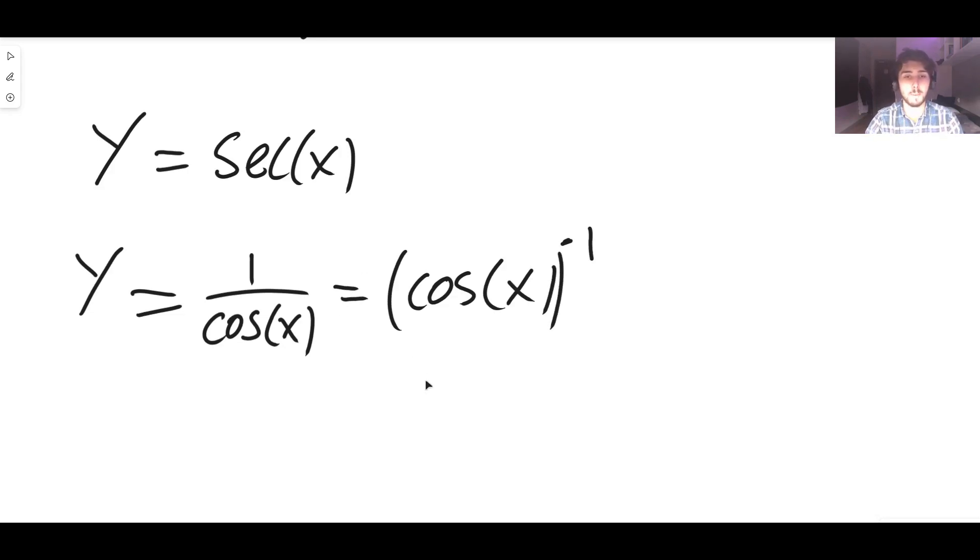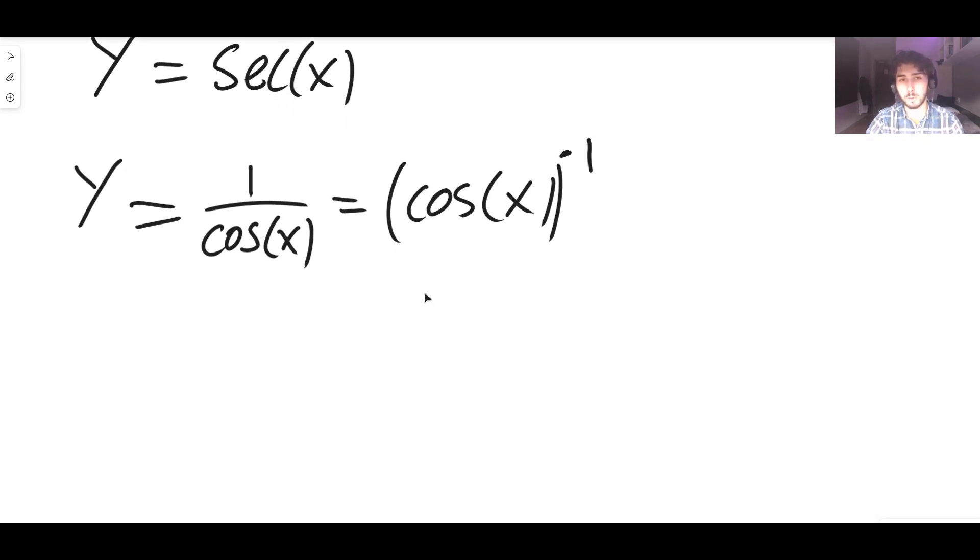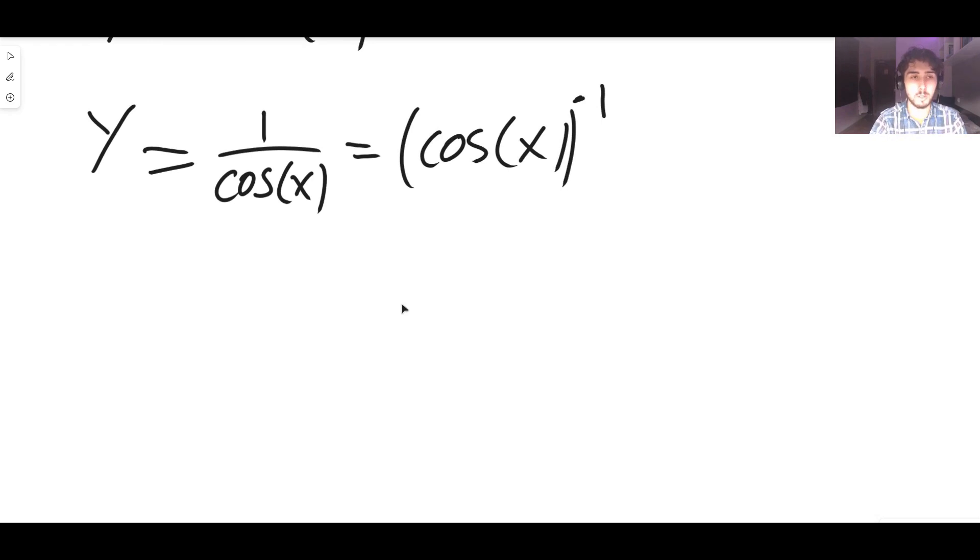Not to be confused with inverse cos which is written as cos to the power of minus one and then x. This is just cos x to the actual power of minus one which is the reciprocal. Okay and then what we do is the chain rule.